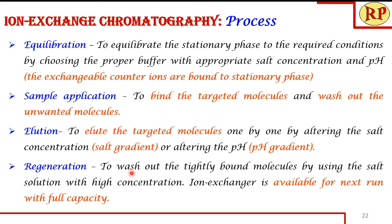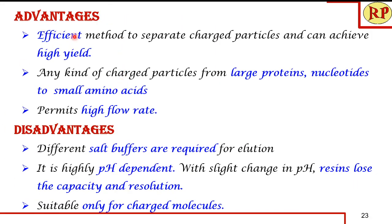Advantages of ion exchange chromatography: it is very efficient for separating charged particles ranging from large to small molecules. An important advantage is that high flow rates can be used — unlike many other column chromatography techniques where flow rate must be carefully controlled for resolution. Here, because the buffer pH and salt concentration drive the separation, the flow rate does not significantly affect the outcome, making the process fast and efficient. Disadvantages: different salt buffers and pH conditions are required for elution; the process is highly pH-dependent — a slight change in pH can cause the resin to lose capacity and resolution. Also, it is only suitable for charged molecules; uncharged molecules cannot be separated by this method.